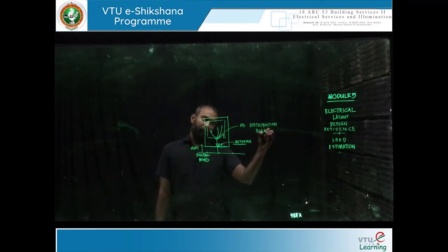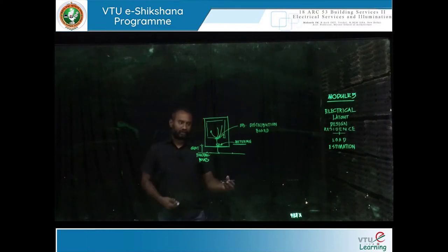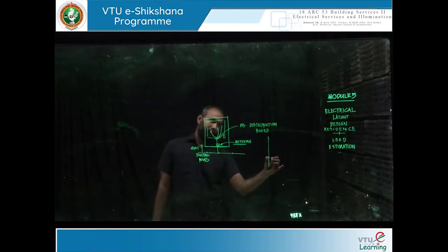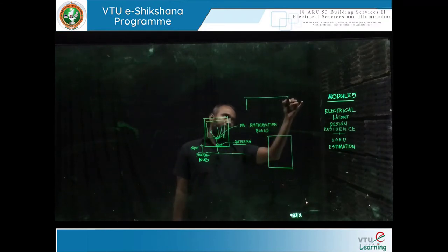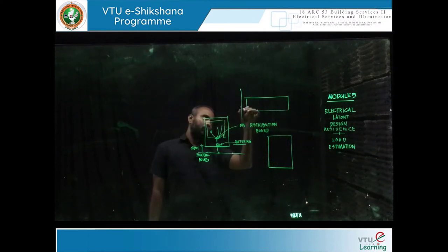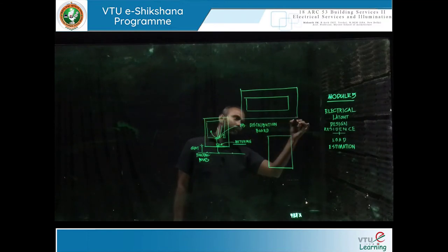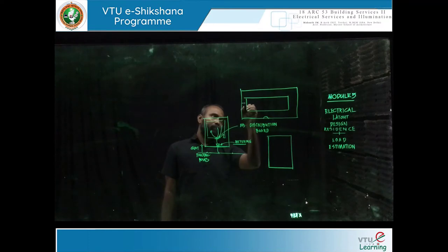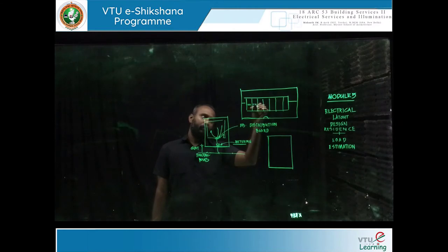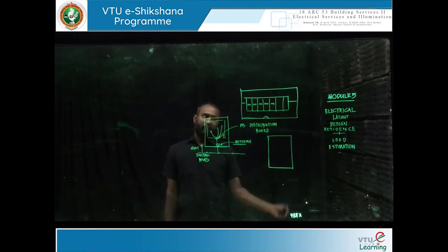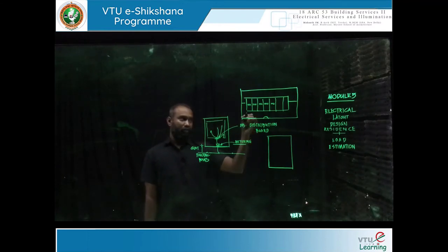The distribution board can be of various sizes, as discussed in earlier chapters, and there can be a number of distribution boards. The ones most commonly seen in houses are of a standard size, with a press button at the bottom, a panel door made of transparent fiber or opaque material. Inside, you have a series of circuit breakers depending upon the requirements, and some of them can just be dummies.